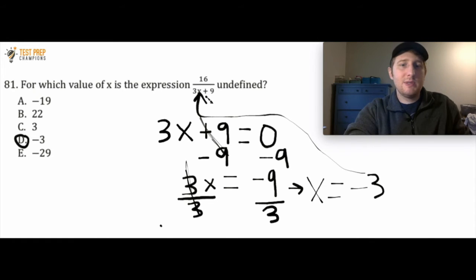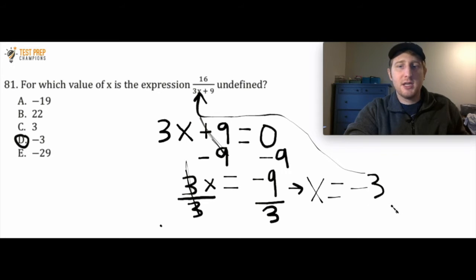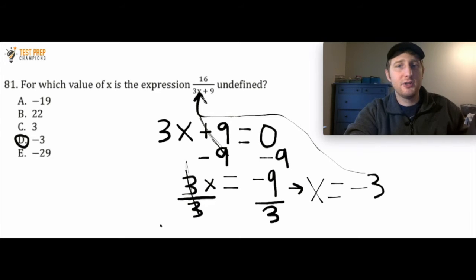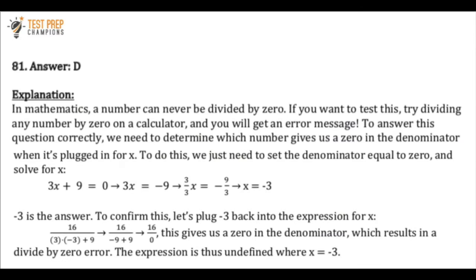All we did was take this 3x + 9, set it equal to 0, solved it for x, and saw that when x equals negative 3, that value makes the expression undefined. Just know how to solve questions like this: take the denominator, set it equal to 0. Let me show you the written solution to this on the screen.